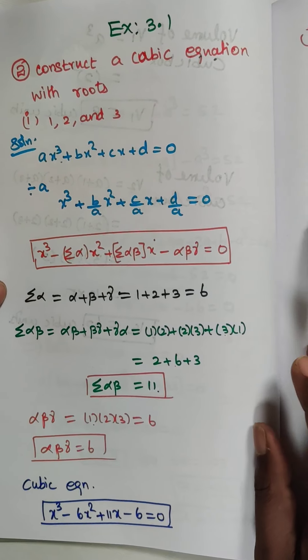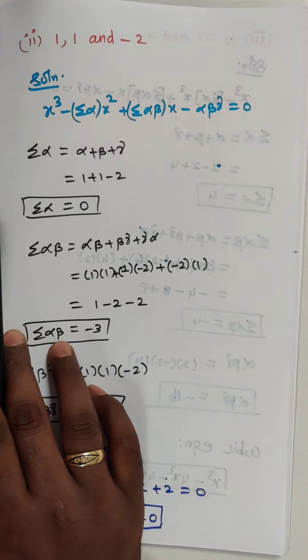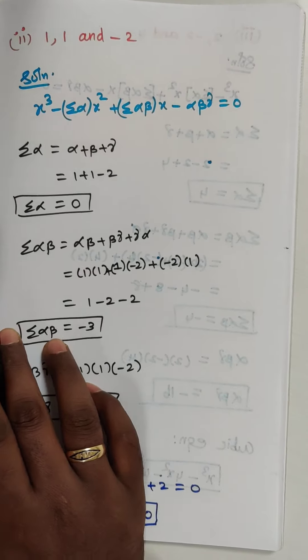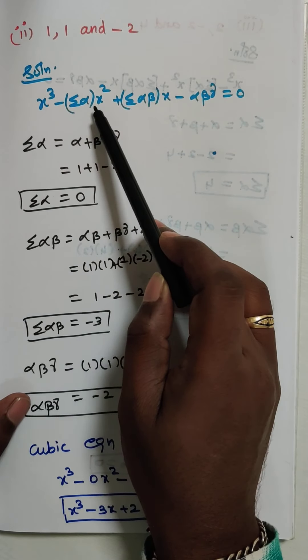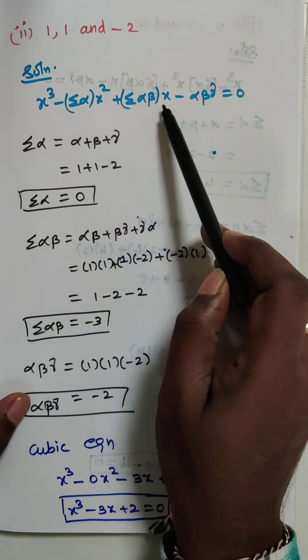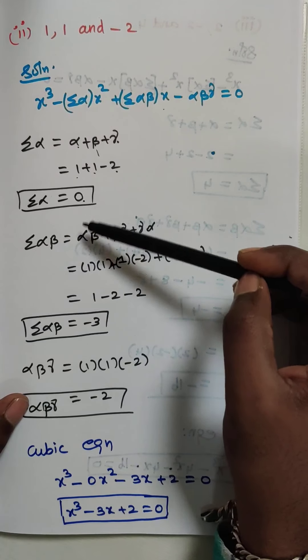Next we have the second subdivision. The roots are 1, 1 and −2. Using the formula x³ − (Σα)x² + (Σαβ)x − αβγ = 0, we find Σα = α + β + γ = 1 + 1 + (−2) = 2 − 2 = 0.